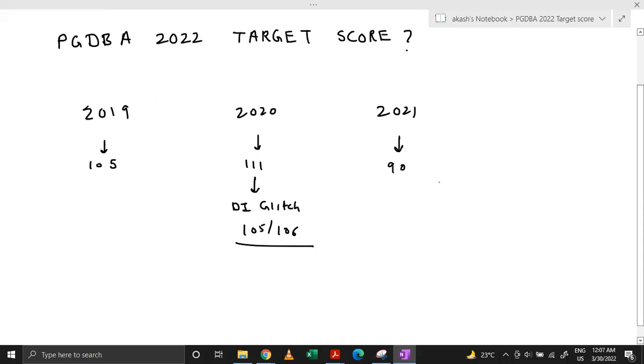In my opinion, the kind of difficulty this paper had, this cutoff would have been around approximately 97 to 100. Now, after looking at these facts, let's see what should be a target score for PGDBA 2022 examination.